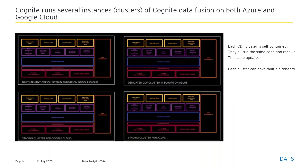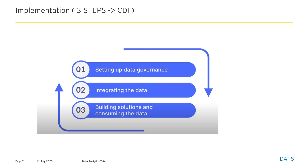Cognite runs several instances or clusters of Cognite Data Fusion on both Azure and Google Cloud. Each CDF cluster is self-contained, runs the same code, and receives the same updates. Each cluster can have multiple tenants. The implementation process is a simple three-step process: first, setting up data governance; second, integrating data; and third, building solutions and consuming data.